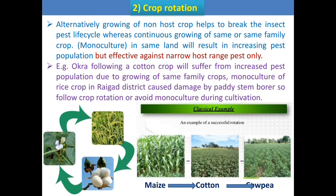Simply put, avoid monoculture — avoid growing the same crop in the same land in the same area. Due to monoculture, pest populations increase in that particular area. To avoid this problem, we go for crop rotation. In crop rotation we grow alternate non-host crops, which helps to break the life cycle of the insect and reduce the pest population.